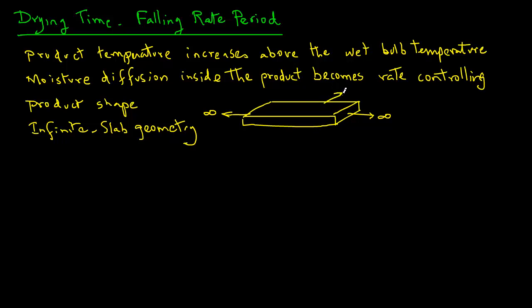In case of the infinite slab geometry, we can write a ratio of moisture contents as W minus WE, where WE is the moisture content at equilibrium, divided by WC minus WE, where WC is the moisture content at the critical point. This ratio equals 8 over pi square, times exponent of minus pi square D times T divided by 4 DC square, where DC is the characteristic dimension, which is the half thickness in case of a slab.